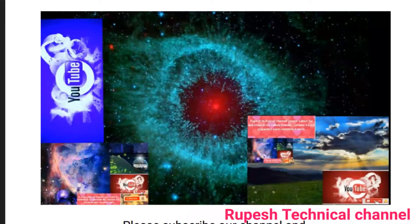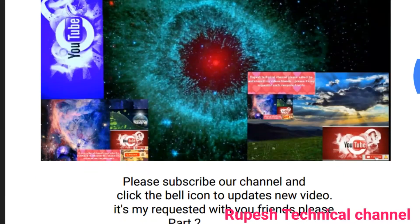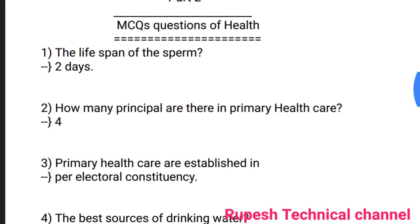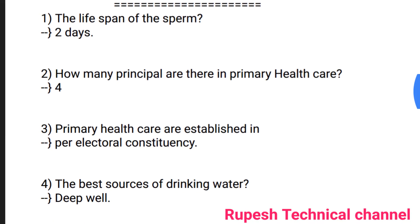Question number one: lifespan of sperm — two days. Question number two: how many principles are there in primary health care — four. Question number three: primary health care is established in per electoral constituency. Question number four: the best source of drinking water — deep well.